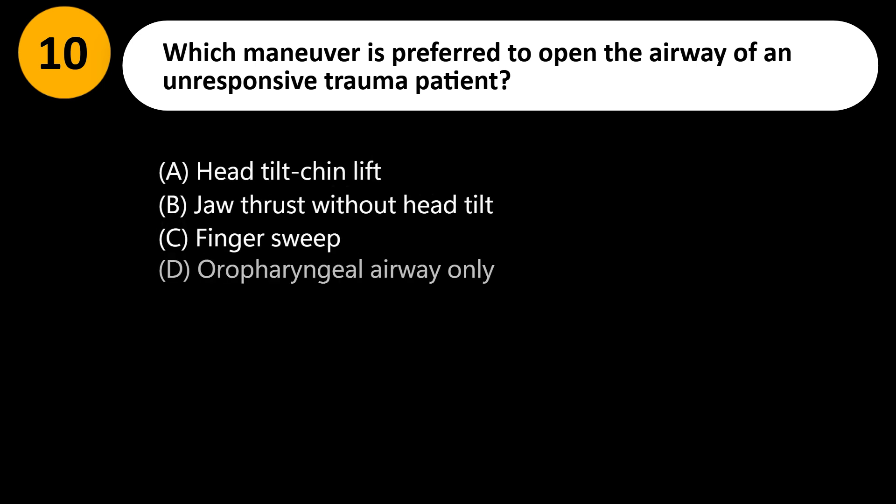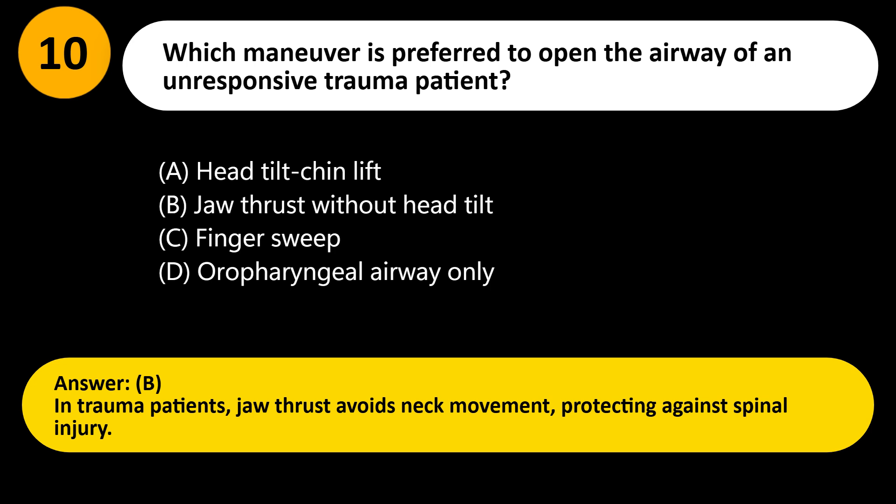Which maneuver is preferred to open the airway of an unresponsive trauma patient? A) Head tilt-chin lift, B) Jaw thrust without head tilt, C) Finger sweep, D) Oropharyngeal airway only. Answer: B. In trauma patients, jaw thrust avoids neck movement, protecting against spinal injury.